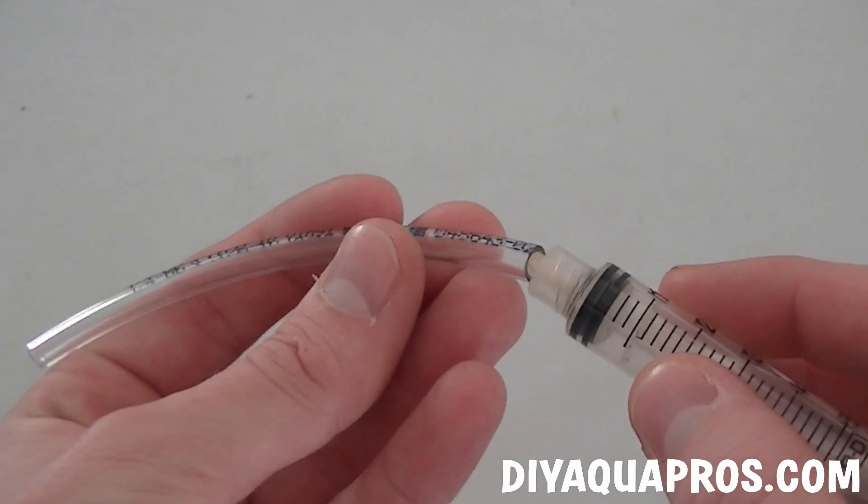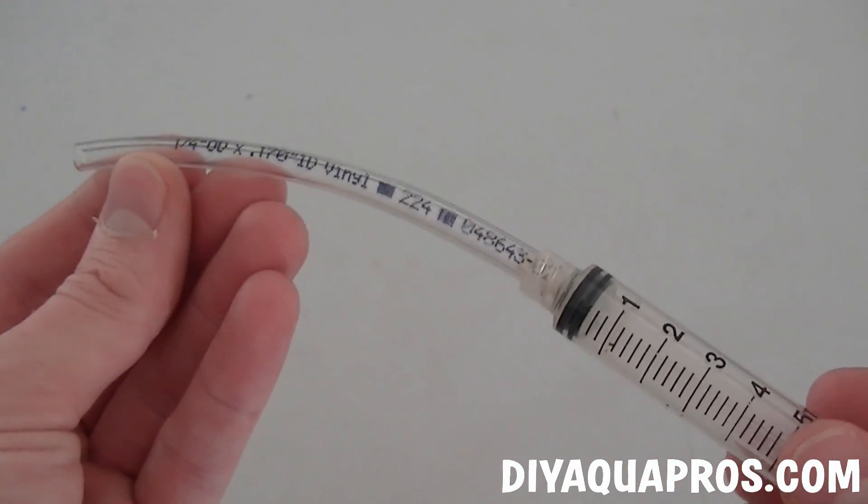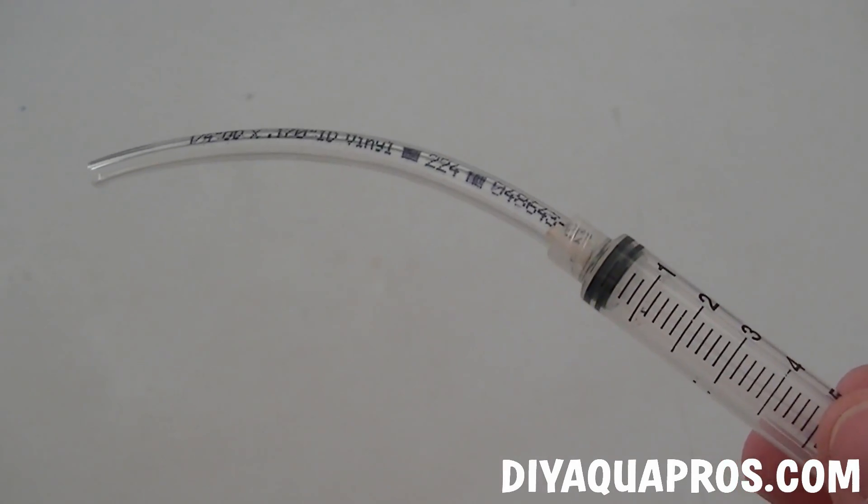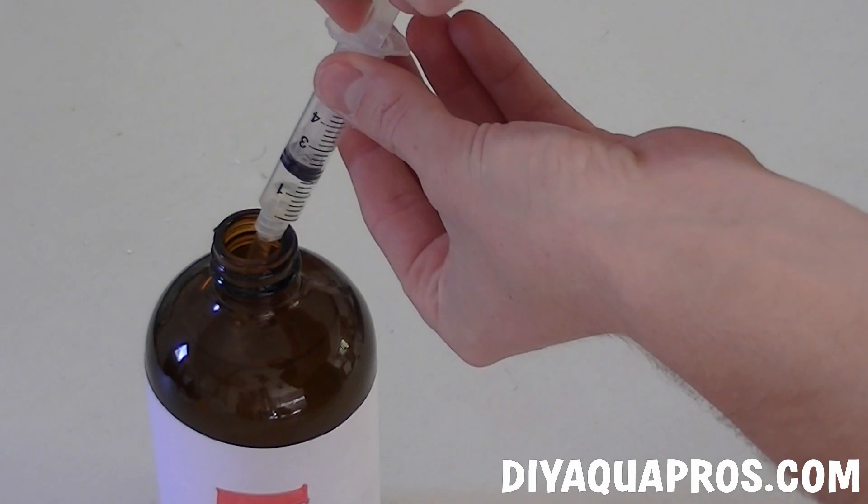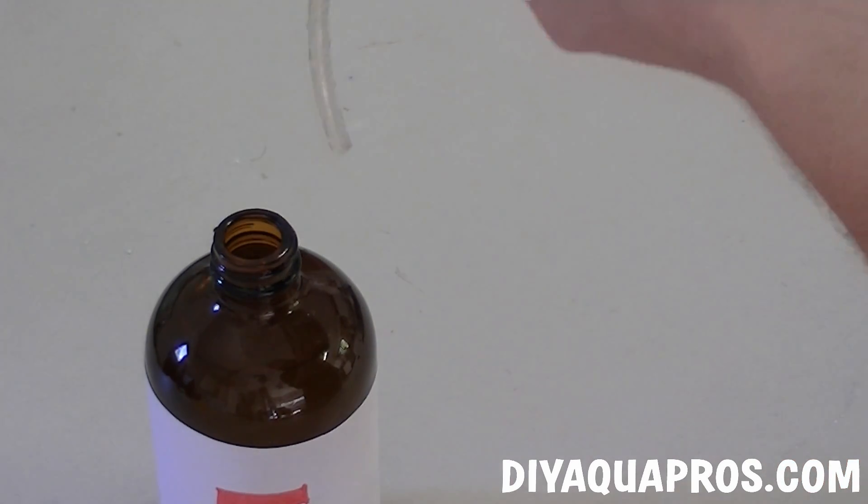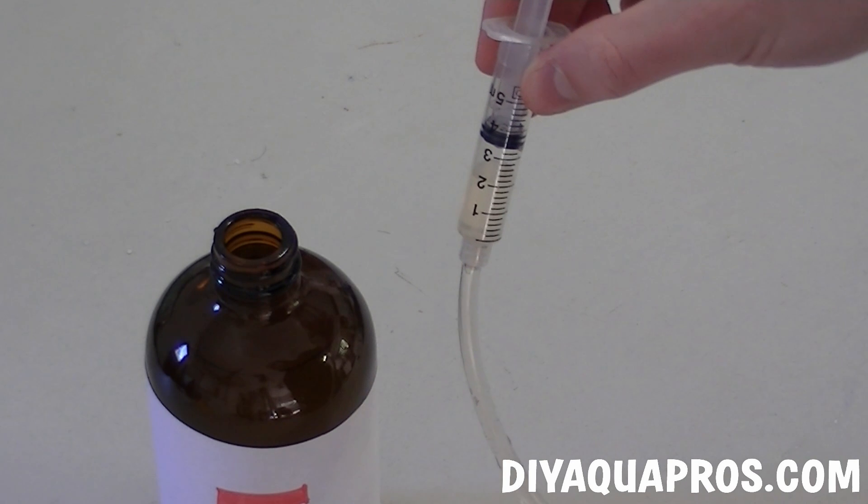To dose our aquarium, we start by attaching a piece of vinyl tubing to the end of our syringe. This 4-inch piece will contain roughly 1 mL of solution. So when we go to extract our dose, we want to pull the plunger back so that the liquid reaches the 2 mL mark. This will account for a full 3 mL because 1 mL of solution is in that vinyl tubing.